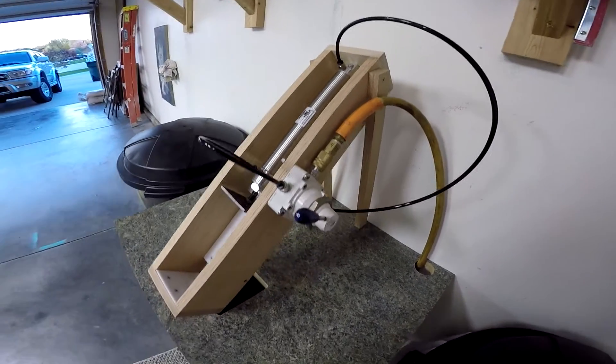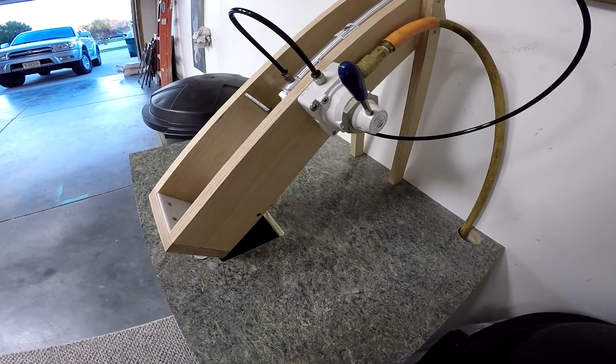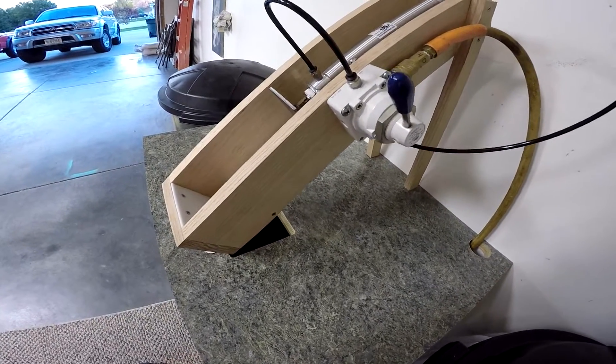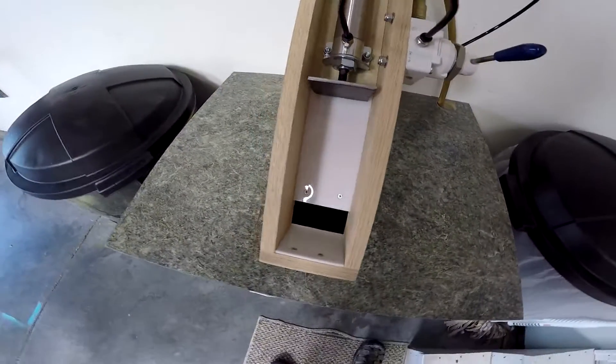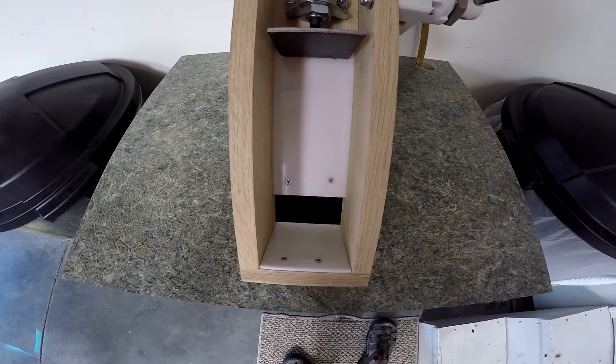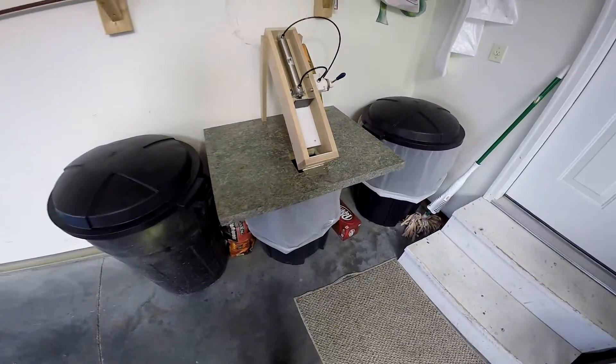As you can see, it's mounted at about a 45-degree angle on top of this piece of countertop. When the cans get crushed, they go right down into the recycle barrel.